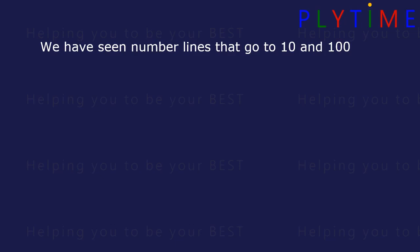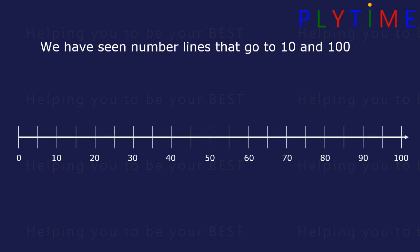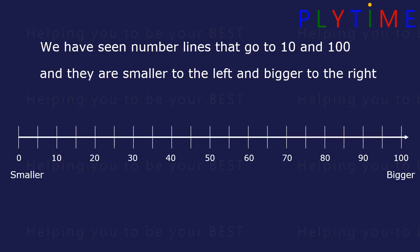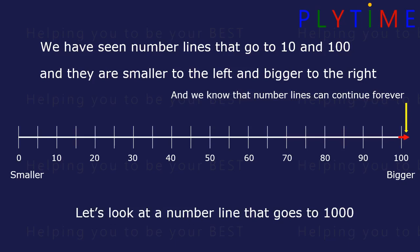We've seen number lines that go to 10, like this, and to 100, like this. They're smaller to the left and bigger to the right, smaller at 0, bigger at 100. And we know number lines can continue forever, way beyond 100. Let's look at a number line that goes to 1000.